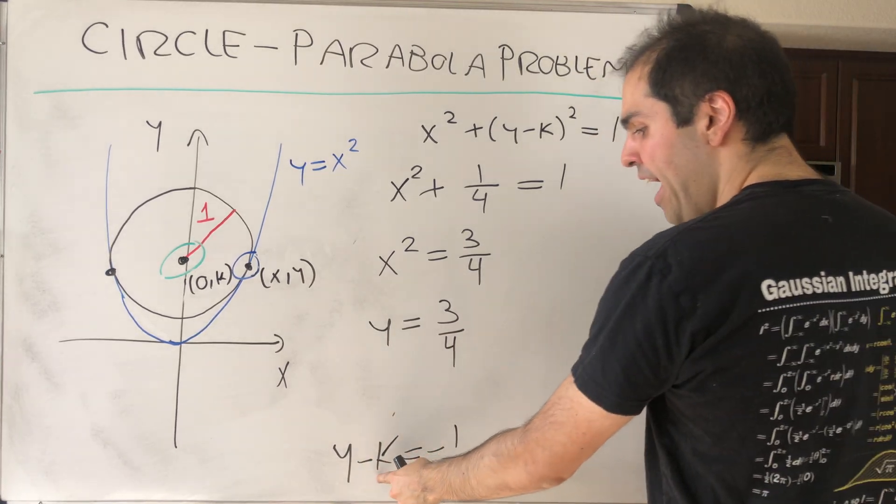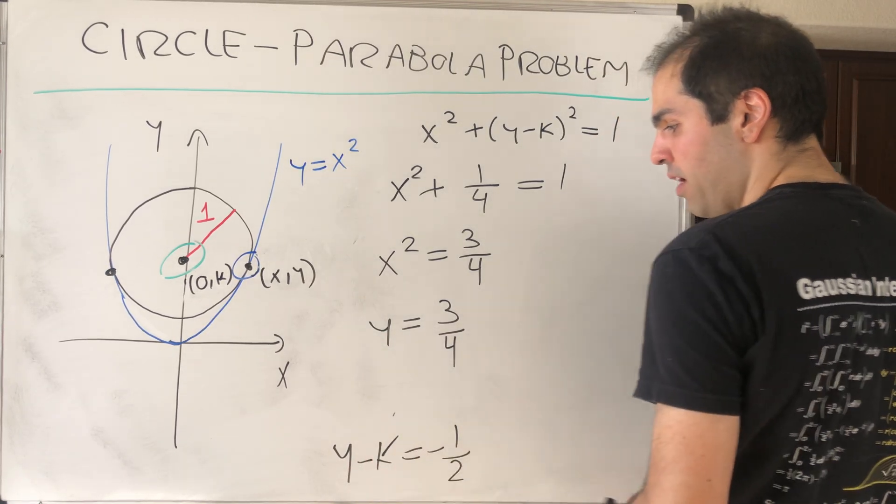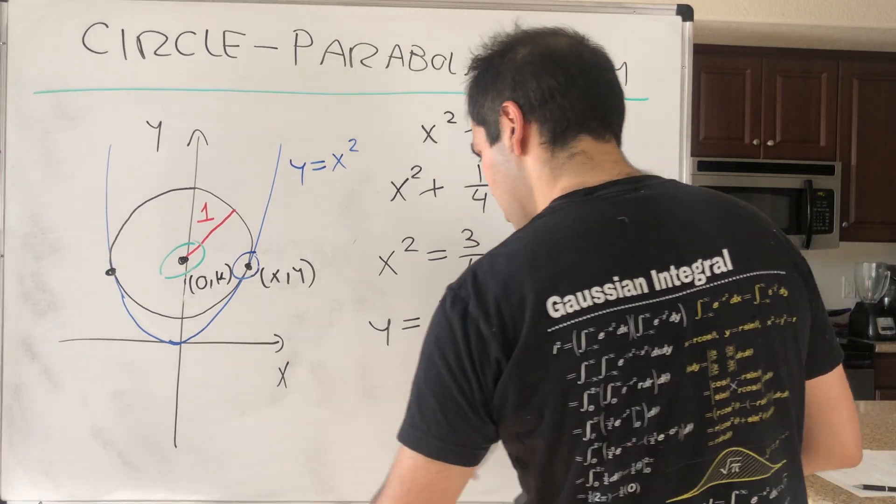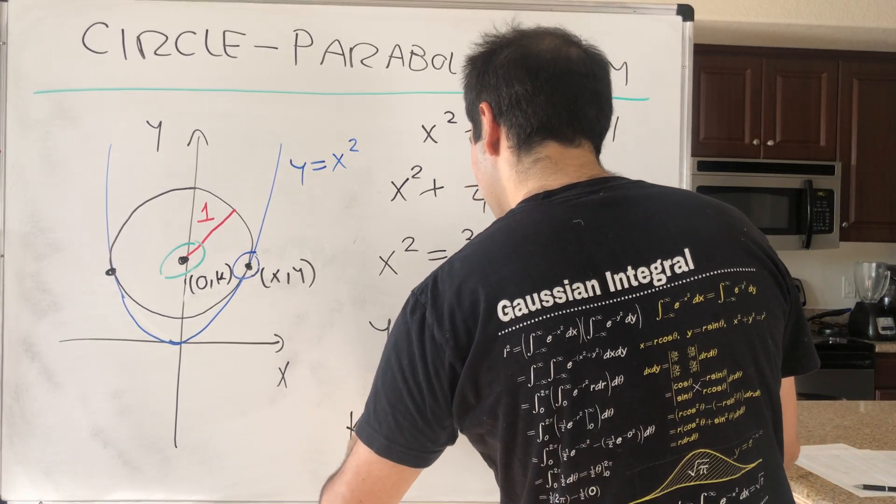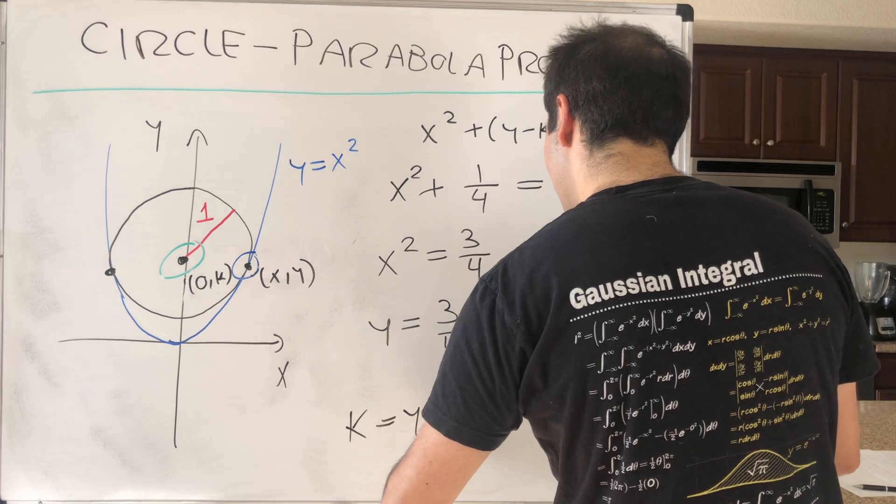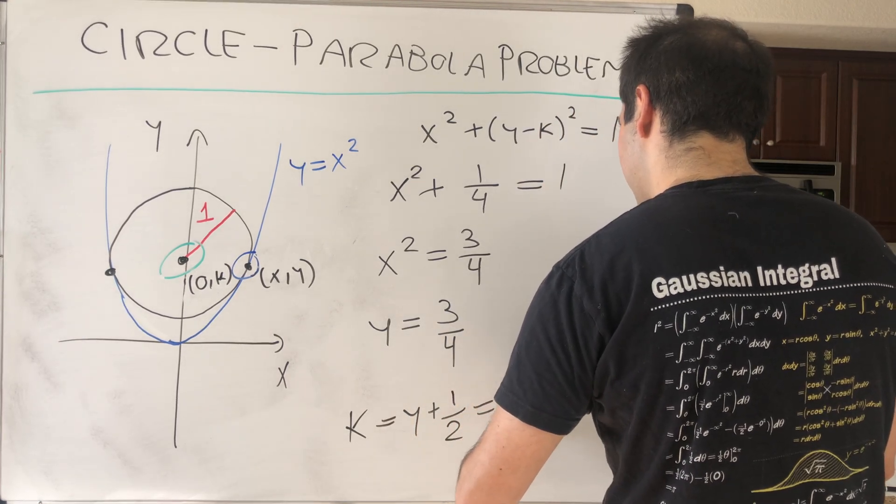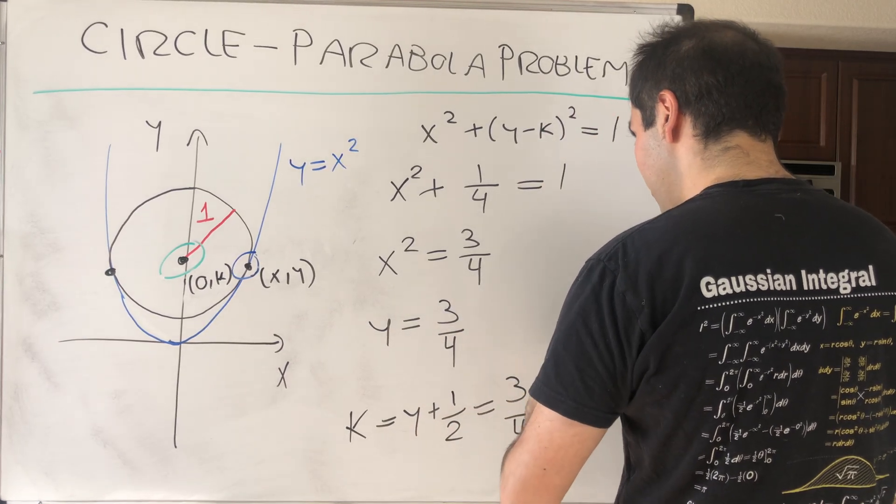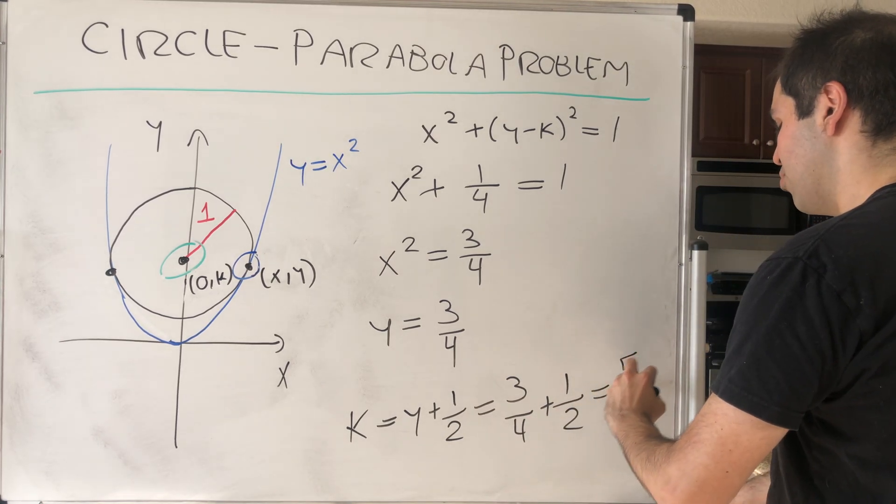So k, which is y + 1/2. So k becomes y + 1/2, which is 3/4 now, plus 1/2. And I believe that just becomes 5/4.